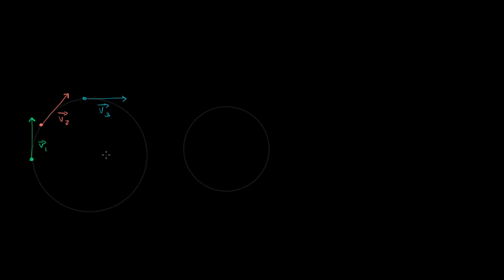What we're going to assume in this video is that the magnitude of these velocity vectors is constant. Or another way to think about it, the speed is constant. So I'll just say lowercase v without the arrow on top — this is a scalar quantity, the speed, or the magnitude of these vectors, and it's going to be constant. So this is equal to the magnitude of vector 1, which is equal to the magnitude of vector 2. The direction is clearly changing, but the magnitude is the same, which is equal to the magnitude of vector 3. And we're going to assume it's traveling in a circle with radius r.